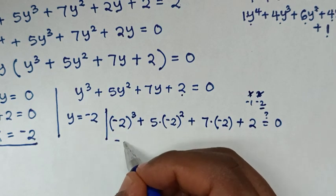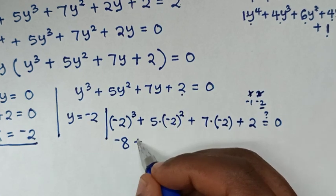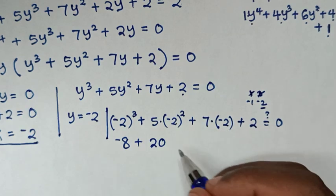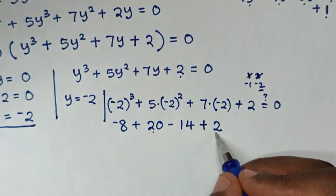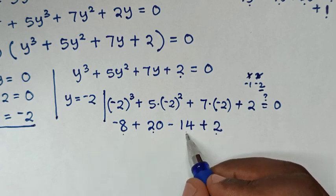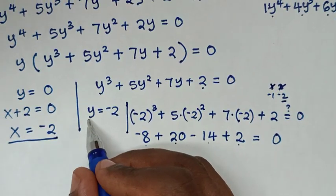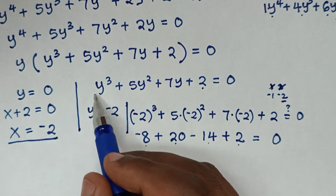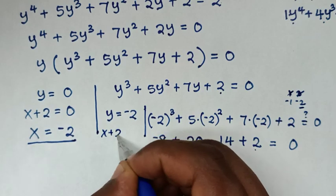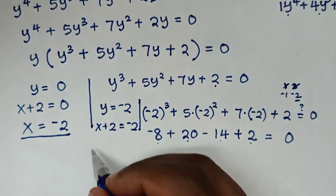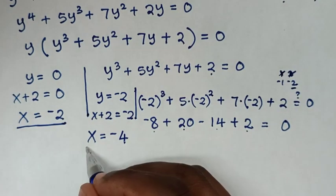Substituting y = -2: (-2)³ + 5(-2)² + 7(-2) + 2 = -8 + 20 - 14 + 2 = 22 - 22 = 0. So y = -2 is indeed a root of the cubic equation. Recalling y = x+2, we get x+2 = -2, so x = -4. This is another value of x.